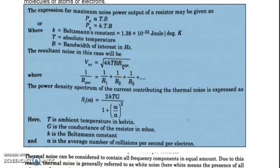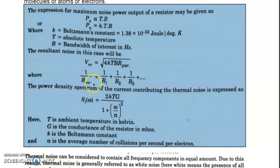If the resistors are connected in parallel, the net resistance formula is: 1 over R_equivalent equals 1/R1 plus 1/R2 plus 1/R3 and so on. So V_NR equals the square root of 4KTB·R, where R is the net resistance of the electrical circuit. This gives us the resultant noise voltage for the network.